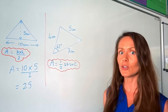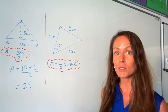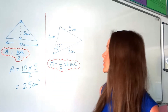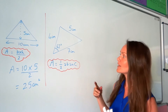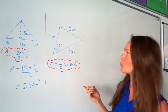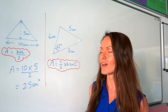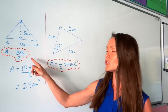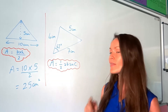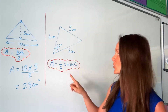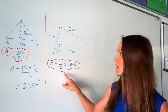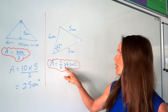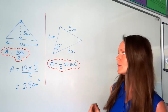Not forgetting the units for area, which are always squared — so that would be centimetres squared. In this next example, we don't know the perpendicular height of this triangle, so we can't use that formula anymore. When that happens, you need to use this formula: the area equals a half AB sine C.